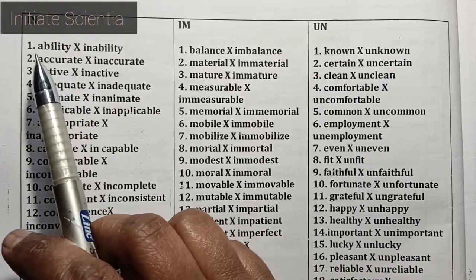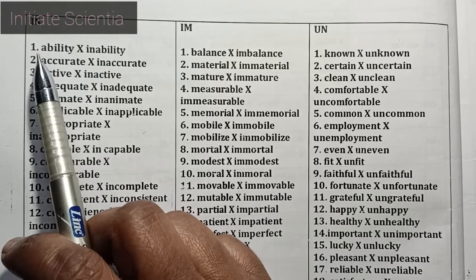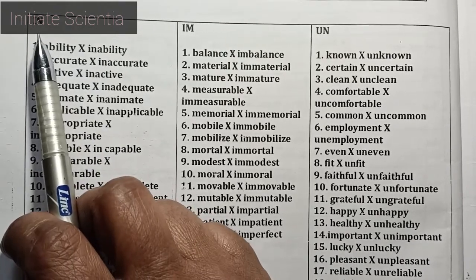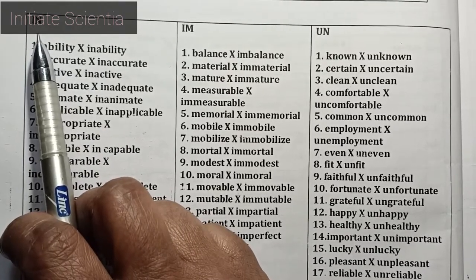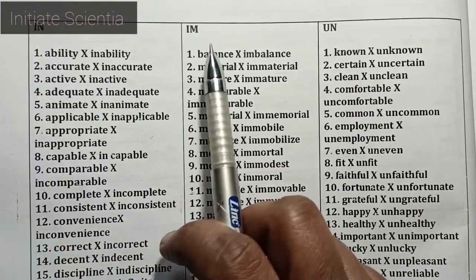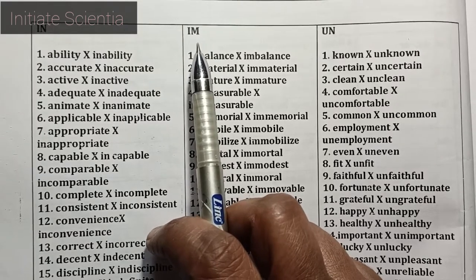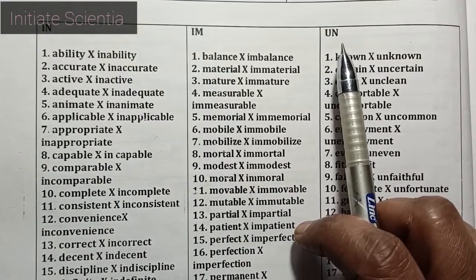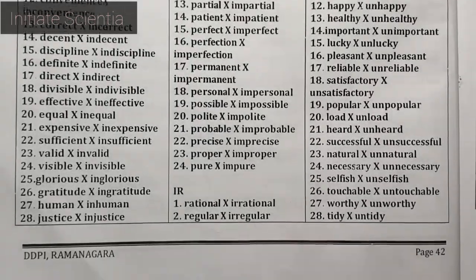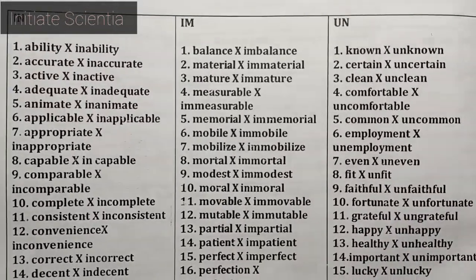The opposite word of 'ability' is 'inability' — you are adding the prefix IN. So certain times you are adding IN, for certain words you are adding IM, for certain words you are using UN, IR, etc. So let us learn which are the words that start with the prefix IN.